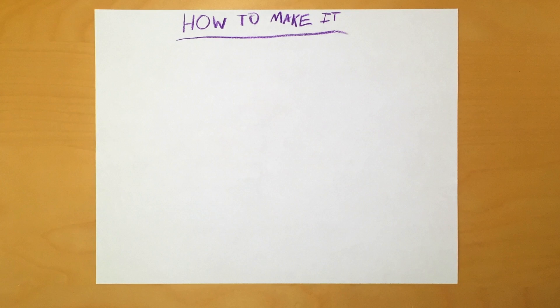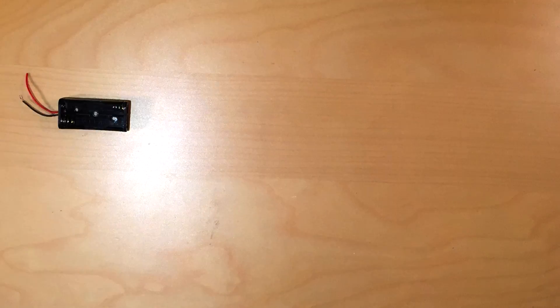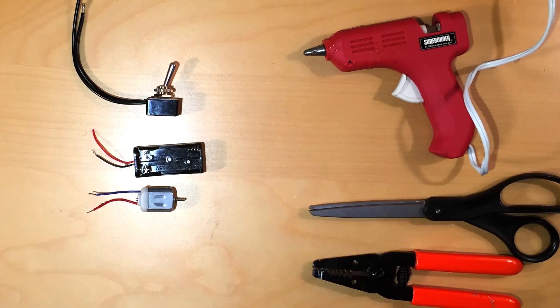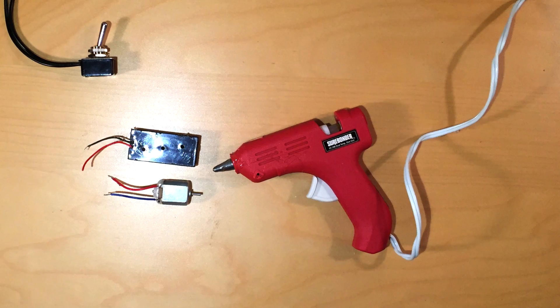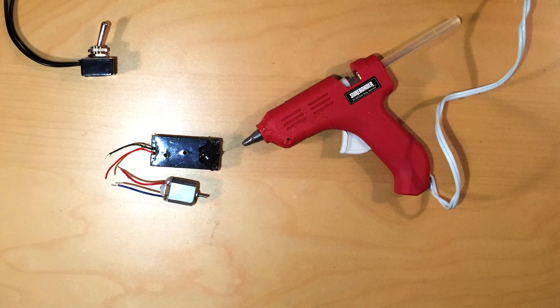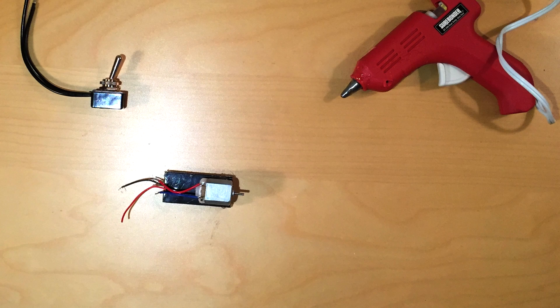Next, we'll go over how to actually make the Jitterbot. Let's get out the battery pack, switch, motor, glue gun, scissors, and wire cutters. First, we'll glue the DC motor to the back of the battery pack. Put some hot glue on the spot where you want to attach the motor and press it down with the wires facing up.